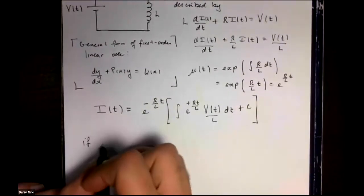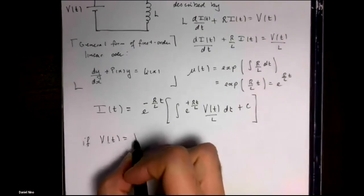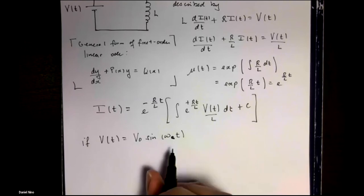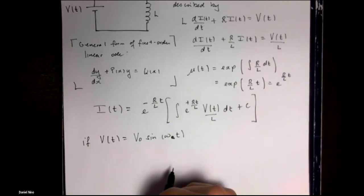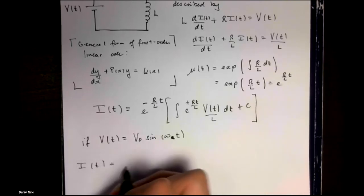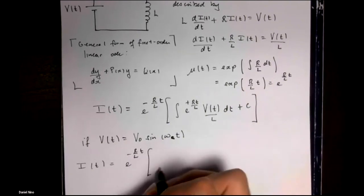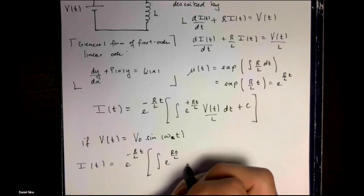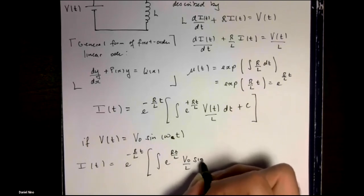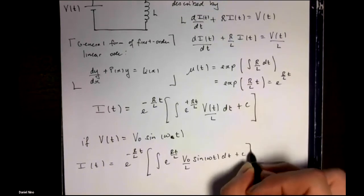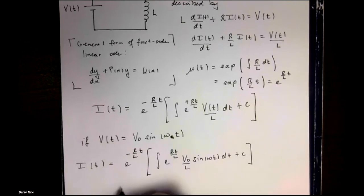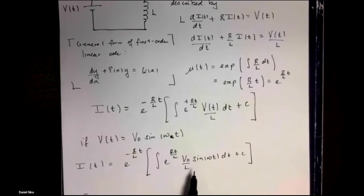For this particular example, we're going to consider the case where the voltage varies as a sinusoid with some frequency omega and amplitude V0. So in that case, we can replace V(t) by that. And then I won't go through the details of performing this integration. You can do that by expressing sine in terms of complex exponentials.